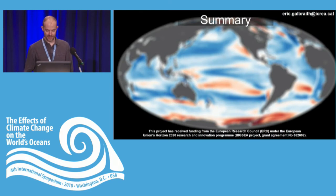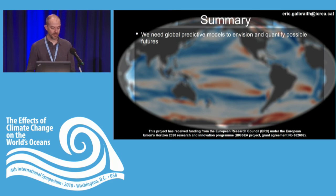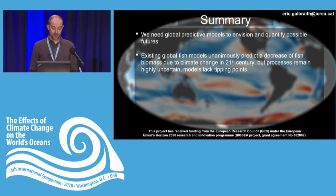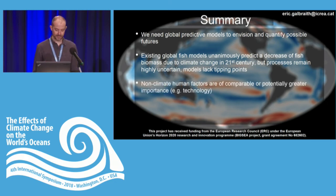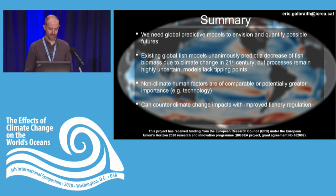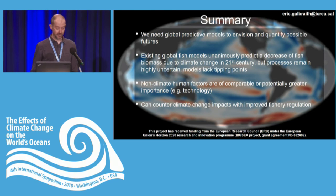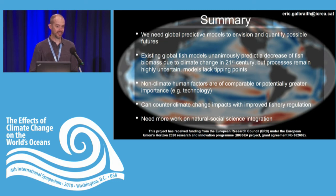In summary: we really need these global predictive models to envision and quantify possible futures. Existing global fish models unanimously predict a decrease in fish biomass due to climate change, but these remain highly uncertain and lack tipping points — so things could be better or worse than they predict. Non-climate human factors appear to be of comparable or potentially greater importance. We can counter climate change impacts by improving fisheries regulations at the global scale, and we need much more effort on natural-social science integration to build unified ways to look at the human-earth system.